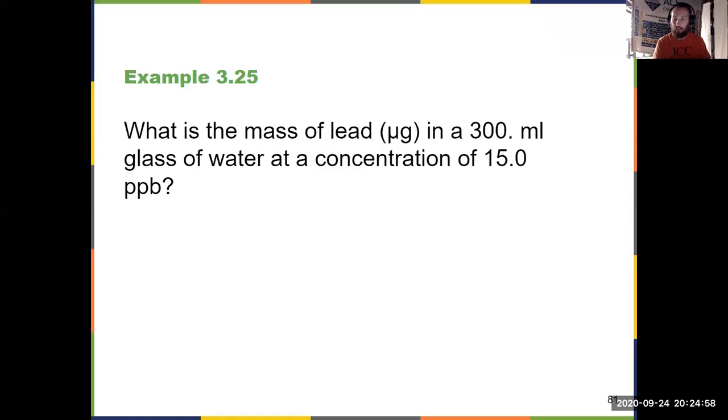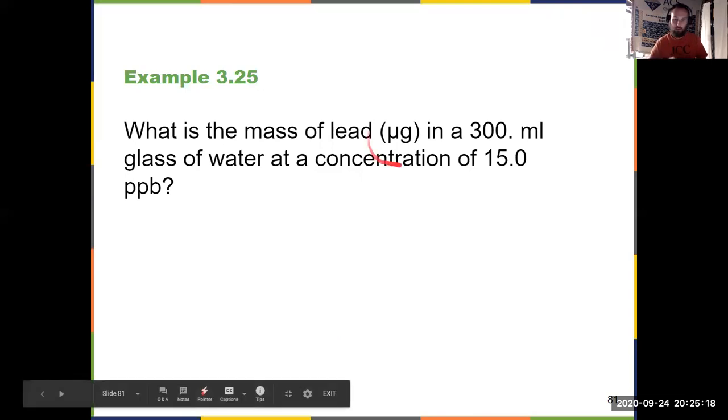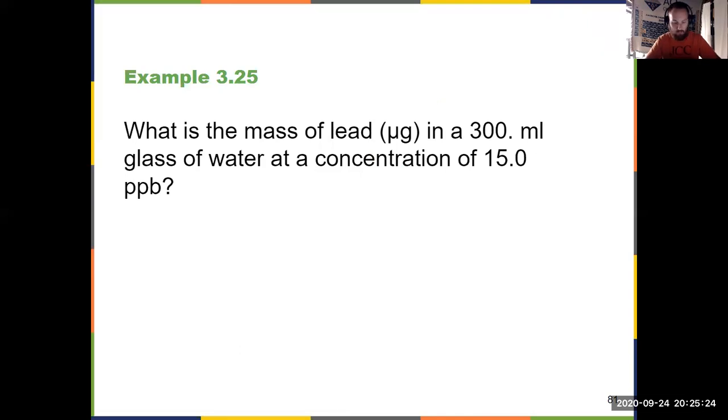So here, what do we do? We have to take that 300 milliliters, convert it to grams, solve for how many grams of lead we have first, and then convert it to micrograms. Just because this question happens to ask for micrograms, it will test your metric prefixes again from chapter one. Again, there's a video up on Blackboard showing how this problem is solved. So you should get a final answer here of 4.5 micrograms of lead with those conditions, making sure you check your sig figs throughout these problems.